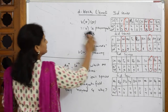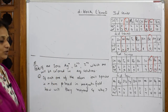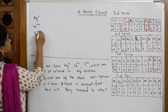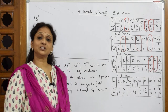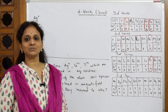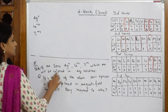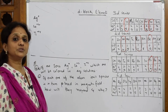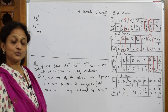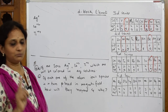Now this is a different type of question. They've asked about ions: Ag+, Co2+, and Ti4+. Which of these will become colored in aqueous solution? For an ion to be colored it must show d-d transitions, and for d-d transitions it must have unpaired electrons. So whichever ion has unpaired electrons will be colored.